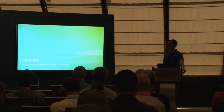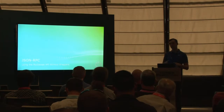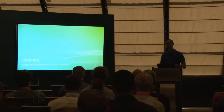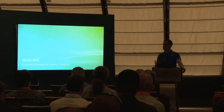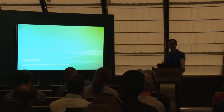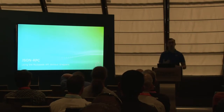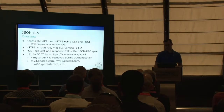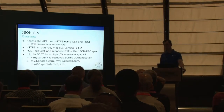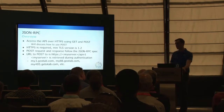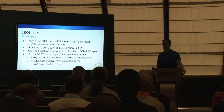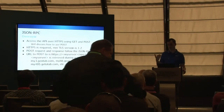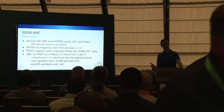The next thing I want to talk about is JSON RPC. We have C# and JavaScript wrappers for our API, but there's an underlying spec called JSON RPC, and some customers can't use our wrappers — they can't interop or don't want to — so they fall back to JSON RPC directly. To access the API over HTTPS using POST: HTTPS is required with a minimum TLS version of 1.2. The POST request and response follow the standard JSON RPC spec. The URL you post to is 'https://[server]/apiv1' — that server is returned to you during authentication along with your token.